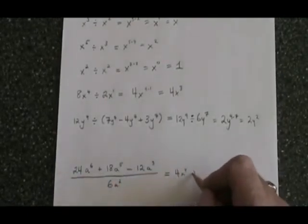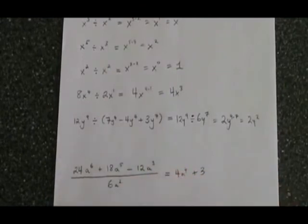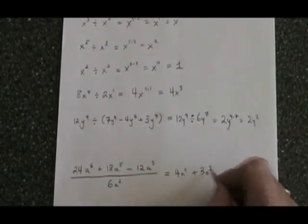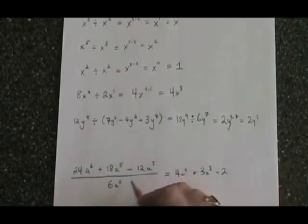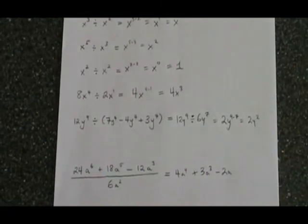18 divided by 6 is 3. a to the 5 divided by a to the 2 is a cubed. Negative 12 divided by 6 is negative 2. And a cubed divided by a squared is a. This is how you divide polynomials.